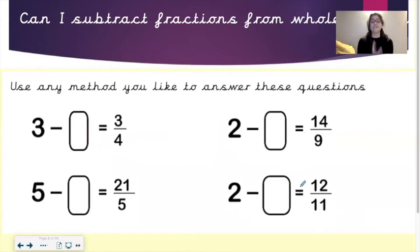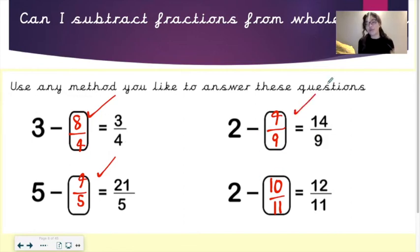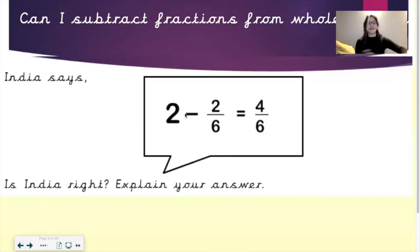Now use any method you like to answer these questions. Off you go. Let's go through the answers. 3 take away 8 quarters equals 3 quarters. 5 take away 4 fifths equals 21 fifths. 2 take away 4 ninths equals 14 ninths. And 2 take away 10 elevenths equals 12 elevenths.